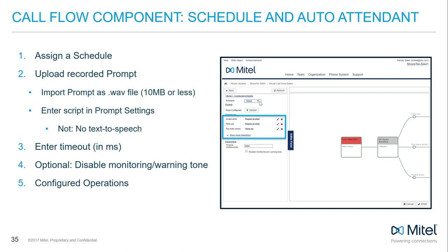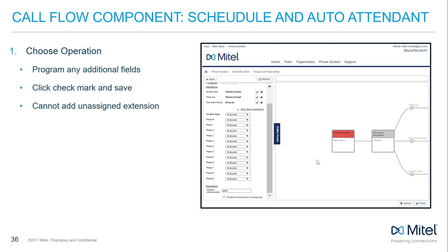All operations already configured for the schedule are displayed in the schedule component details. Click Show More Operations to view all programmable operations for the schedule. All operations have the same dropdown options, except the multiple digits and too many errors operations, which offer a few different programming options. There are too many programming options to cover them all, but let's explore the most commonly used menu prompt programming.